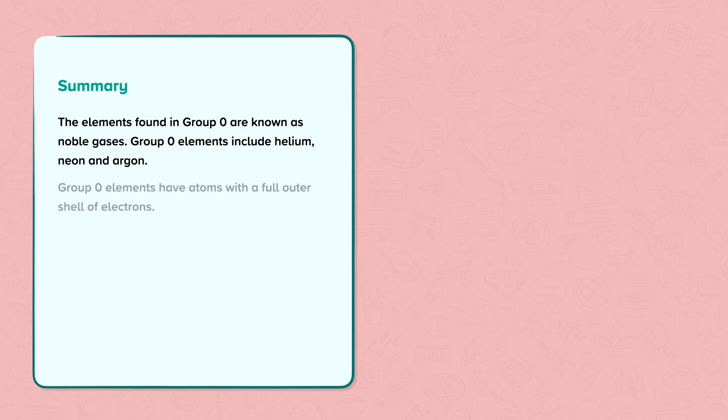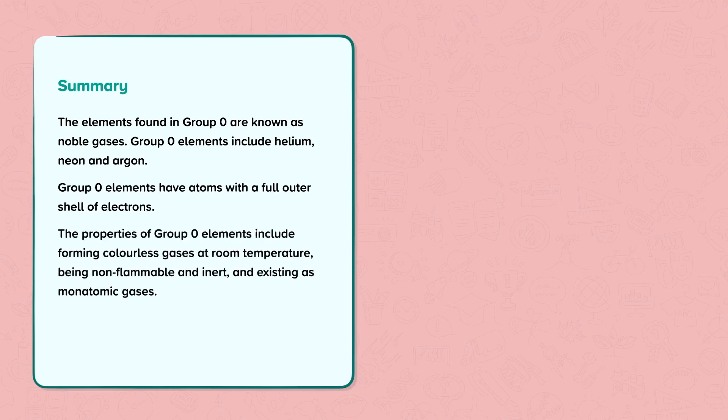Group 0 elements have atoms with a full outer shell of electrons. The properties of group 0 elements include forming colourless gases at room temperature, being non-flammable and inert, and existing as monatomic gases. The boiling point of group 0 elements increases as you go down the group.